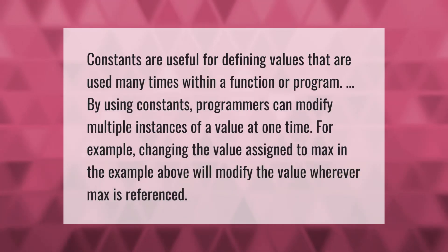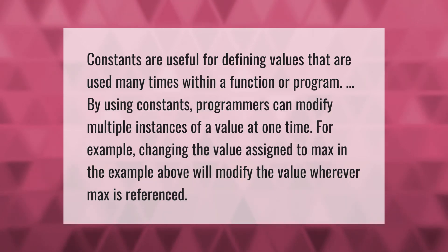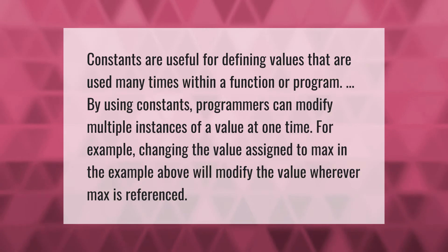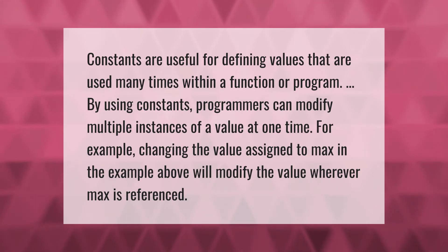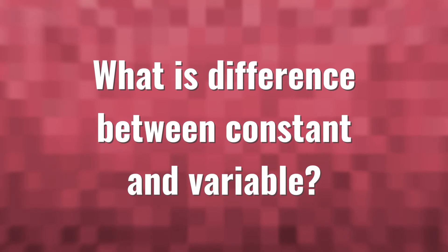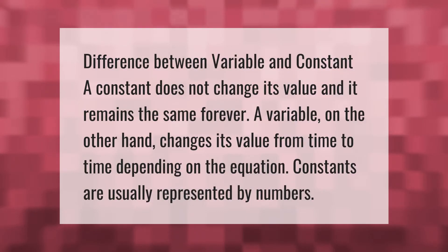Constants are useful for defining values that are used many times within a function or program. By using constants, programmers can modify multiple instances of a value at one time. For example, changing the value assigned to max in the example will modify the value wherever max is referenced.